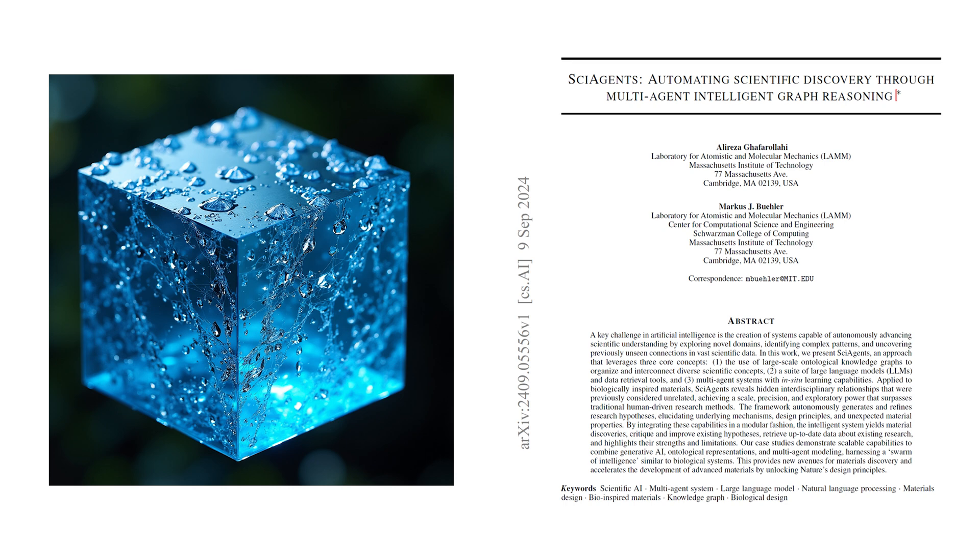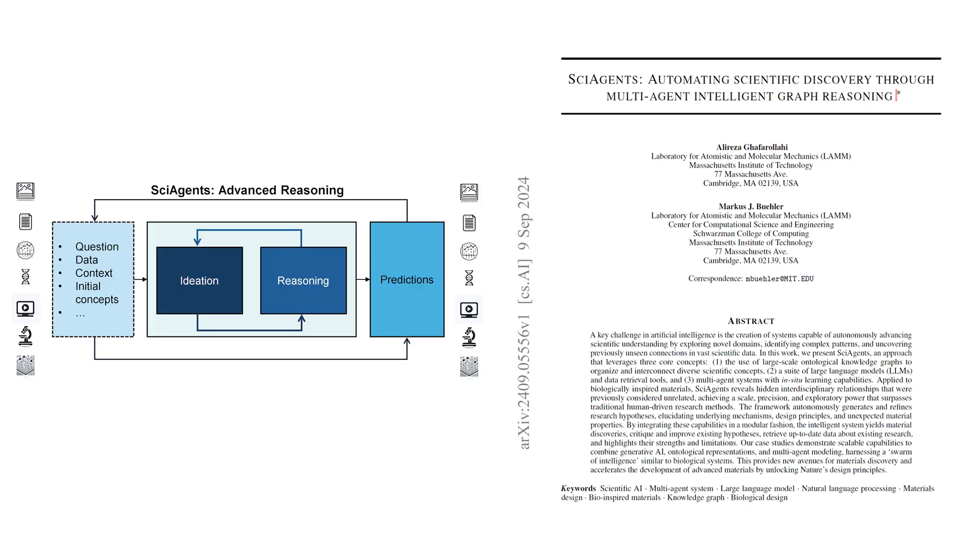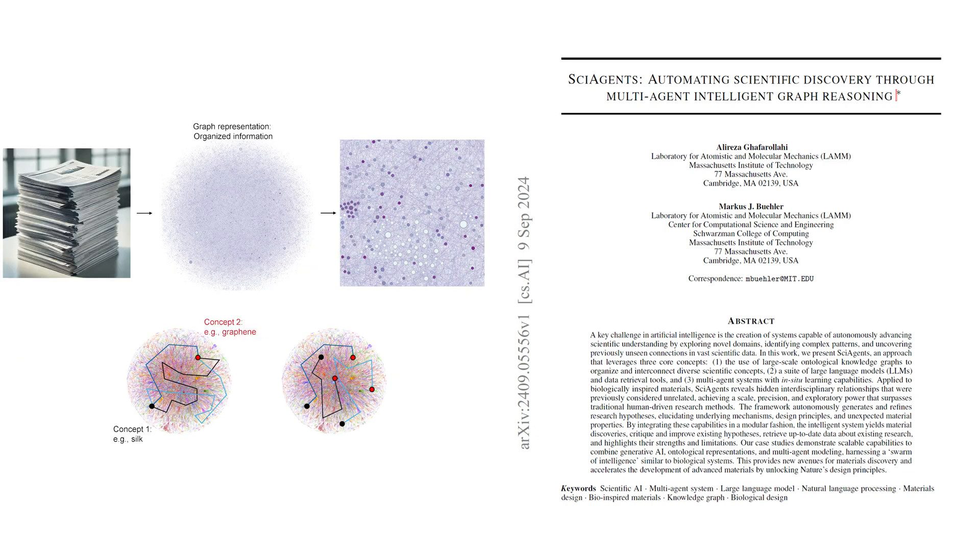SciAgents, that sounds intriguing. What exactly does it do? Well, in essence, SciAgents leverages large-scale ontological knowledge graphs, large language models, also known as LLMs, and multi-agent systems to automate the scientific discovery process. Okay, that's a mouthful. Let's break that down a bit. First off, what's an ontological knowledge graph? Great question. Think of an ontological knowledge graph as a massive map that connects different concepts and ideas in a structured way.